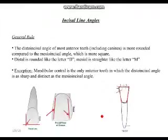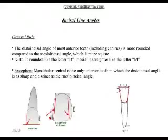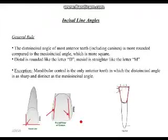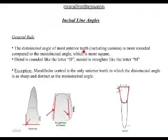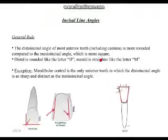Now we move on to incisal line angles. From a general overview, the incisal line angle is where the incisal edge curves and confines to a line. We're talking about the distal incisal angle and the mesial incisal angle. As a general rule for anterior teeth including canines: the distal incisal angle is more rounded compared to the mesial incisal angle, which is more square.